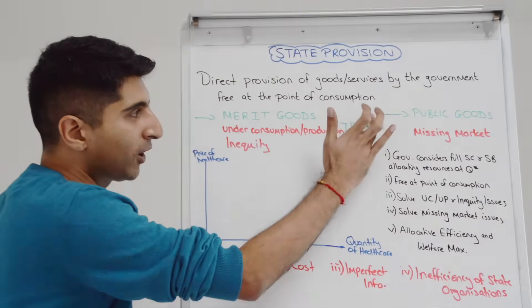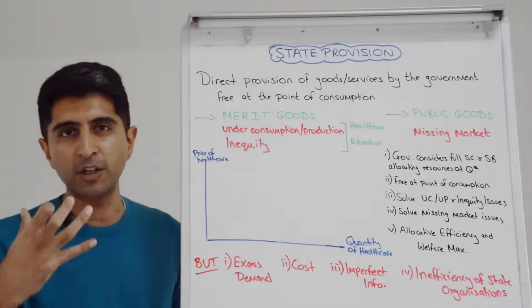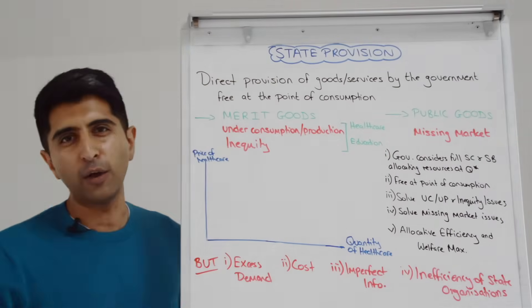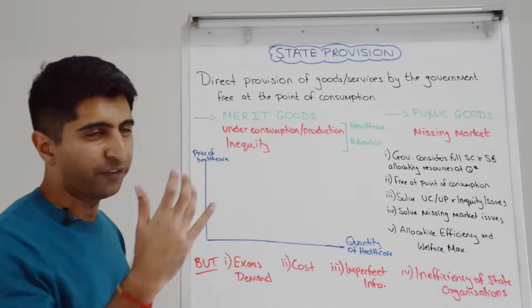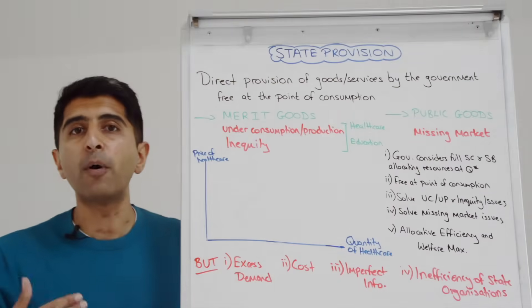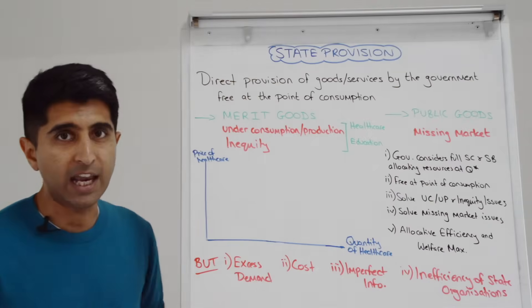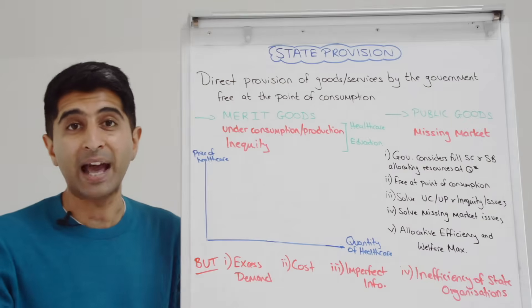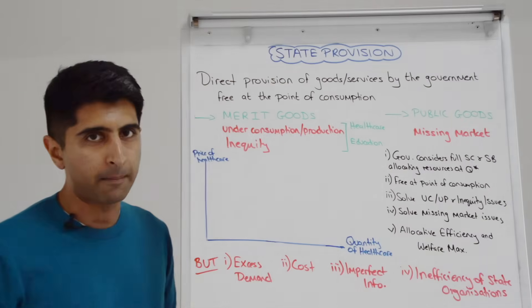So what kind of merit goods are we talking about? Clearly, we're talking about healthcare and education. We know there is under-consumption and under-production of these left to the free market, but certainly on the grounds of morality, fairness, and equity, we could argue that nobody should be excluded from accessing health or education, in which case you can bring in state provision as a viable policy to solve that market failure.